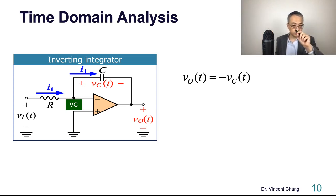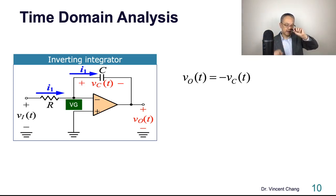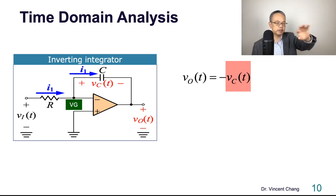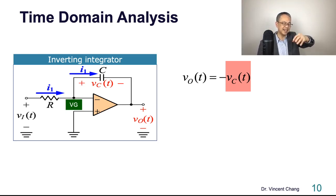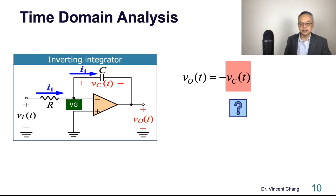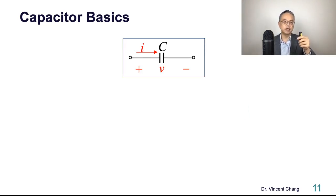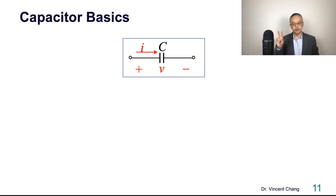Because of the virtual ground on the inverting terminal, V_out is actually negative the capacitor voltage. So how do we deal with the capacitor in the time domain? In the frequency domain you replace C with an impedance of 1/sC, but in the time domain we need to handle it differently. Let me quickly sum up some capacitor basics from physics and network theory — two characteristics you need to know.